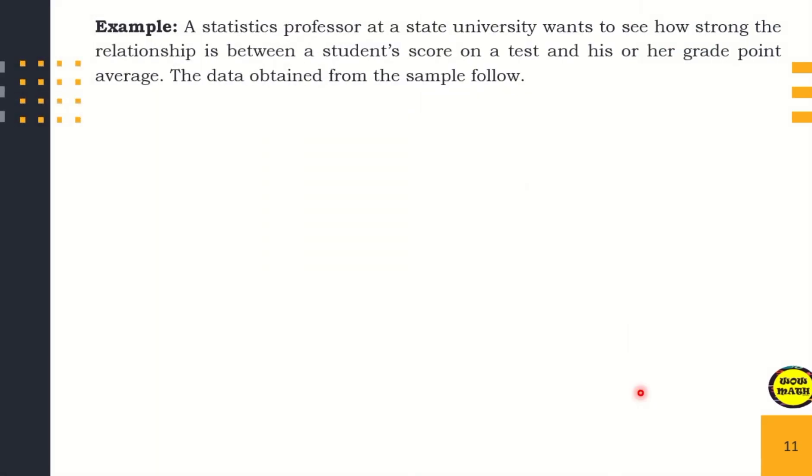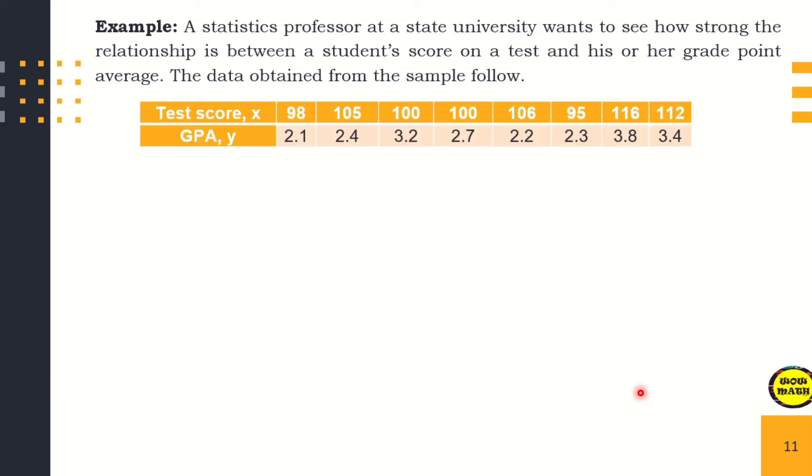Let's have an example. A statistics professor at a state university wants to see how strong the relationship is between a student's score on a test and his or her grade point average. The data obtained from the sample follows. The test scores is our X and the GPA is our Y. The test scores are 98, 105, 100, 100, 106, 95, 116, and 112. The corresponding GPAs are 2.1, 2.4, 3.2, 2.7, 2.2, 2.3, 3.8, and 3.4.